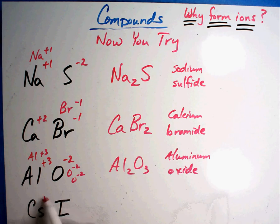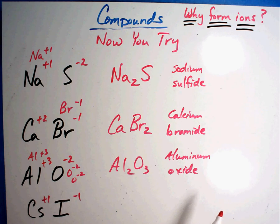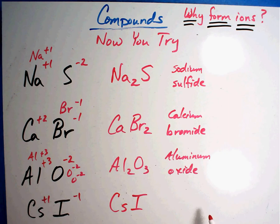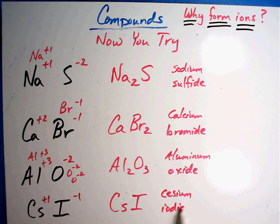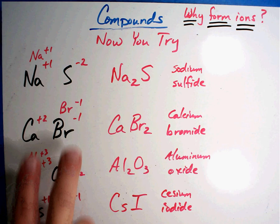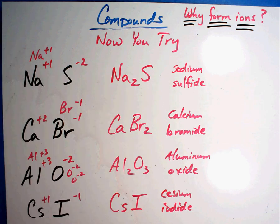In the last one, cesium is plus one and iodine is minus one. They're supposed to equal zero, and they do — so I don't need to do anything. It took one of each: CsI, called cesium iodide. Those are the answers for how you make simple ionic compounds. You check your charges; if they don't equal zero, you've got to figure out how many make it work out. Make sure you go to the next section — I'm going to show you a shortcut that will make your life even easier.